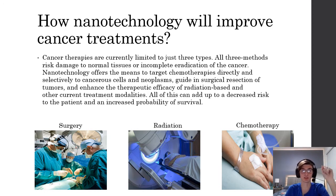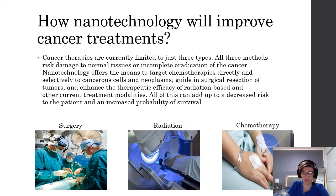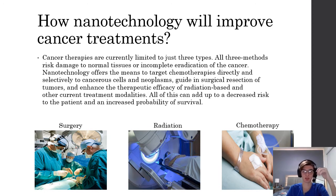All of these can add up to a decreased risk to the patient and increased probability of survival. When having surgery, radiation, or chemotherapy for a malignant tumor, there's a high risk of secondary effects — you could spread cancer to another tissue, or not fully eliminate the tumor, and chances of survival are not the same. Today, scientists and engineers are finding ways to make materials at the nanoscale — one to 100 nanometers — to take advantage of enhanced properties such as higher strength, lighter weight, increased control of the light spectrum, and greater chemical reactivity than their larger-scale counterparts.